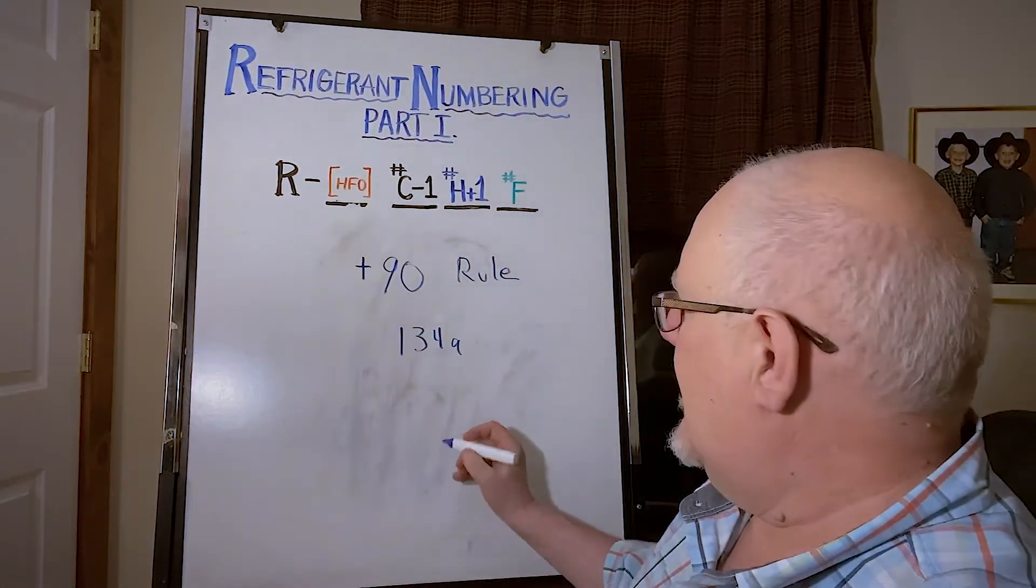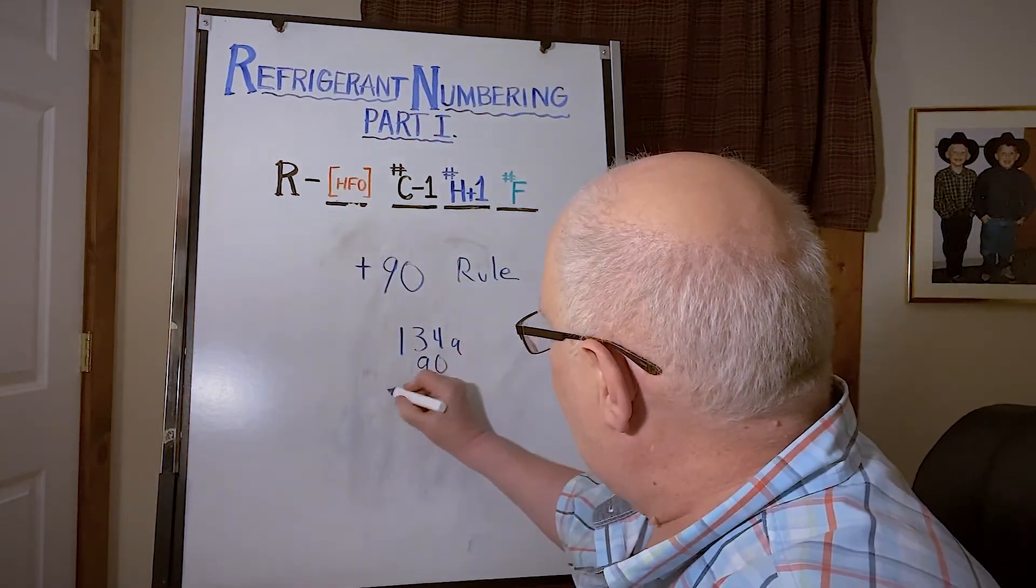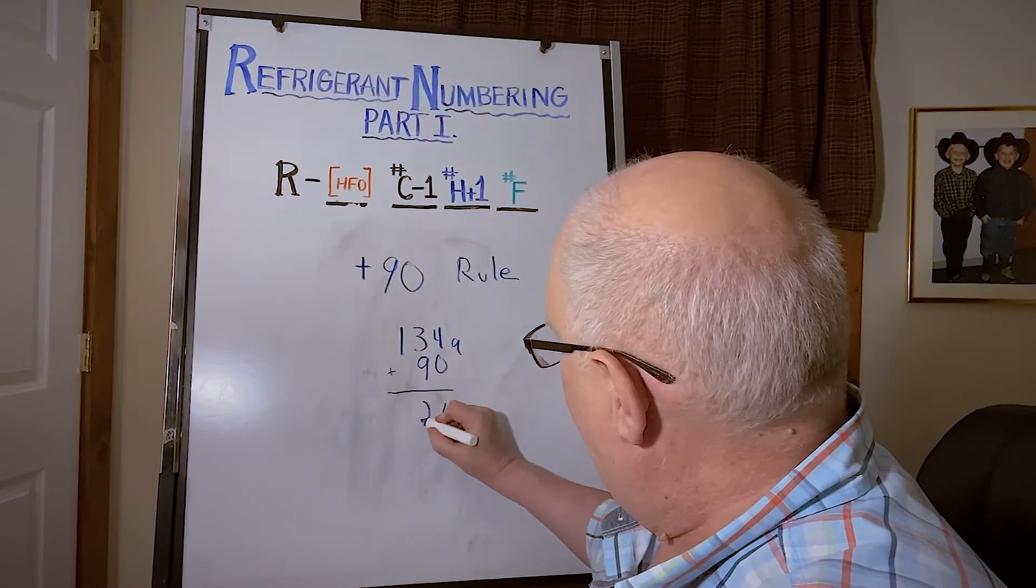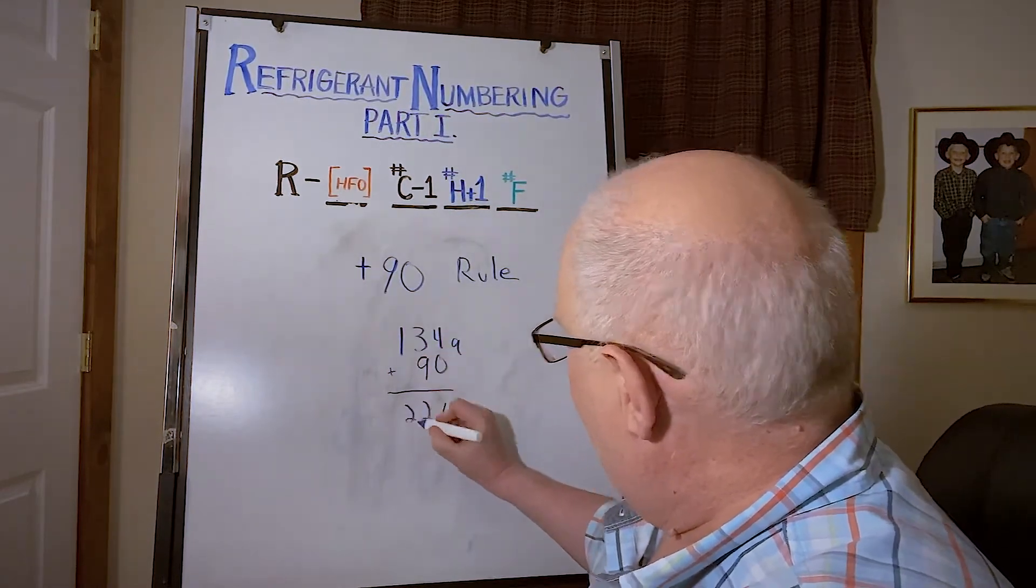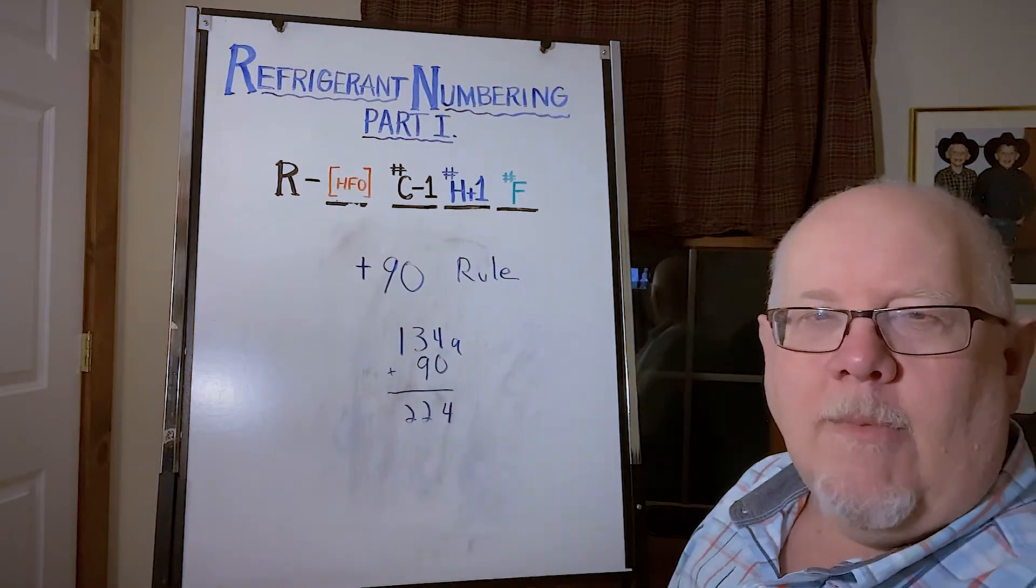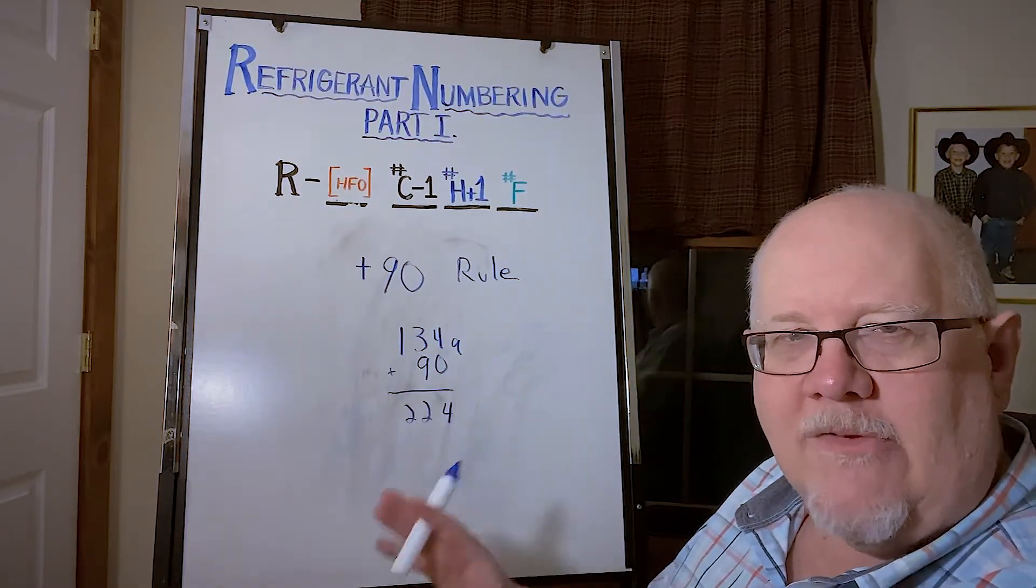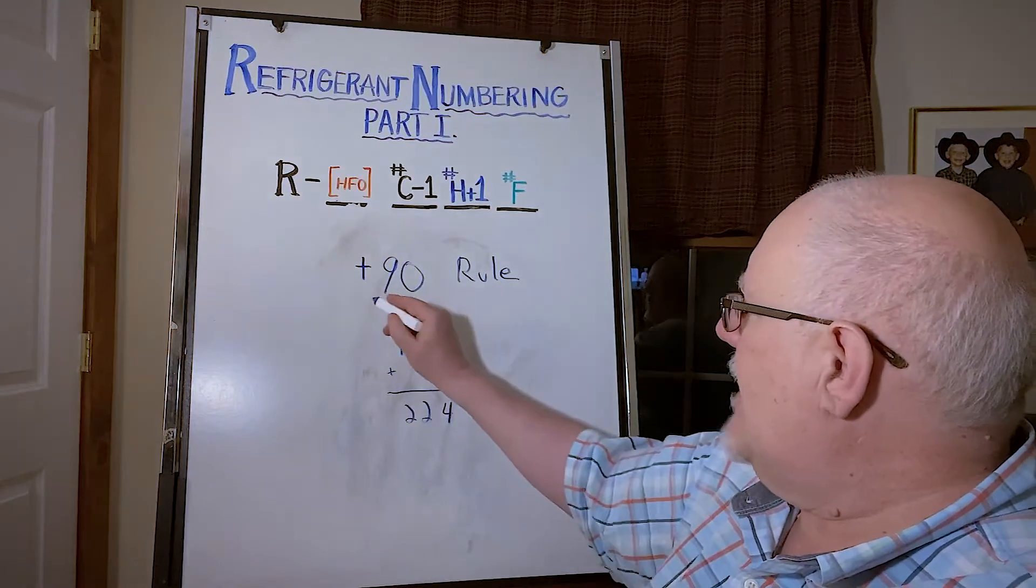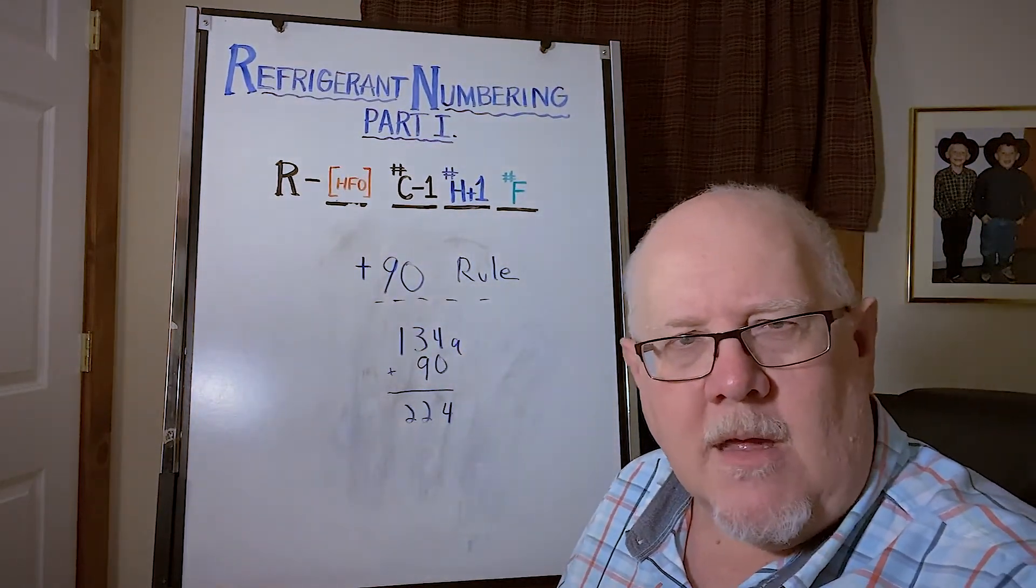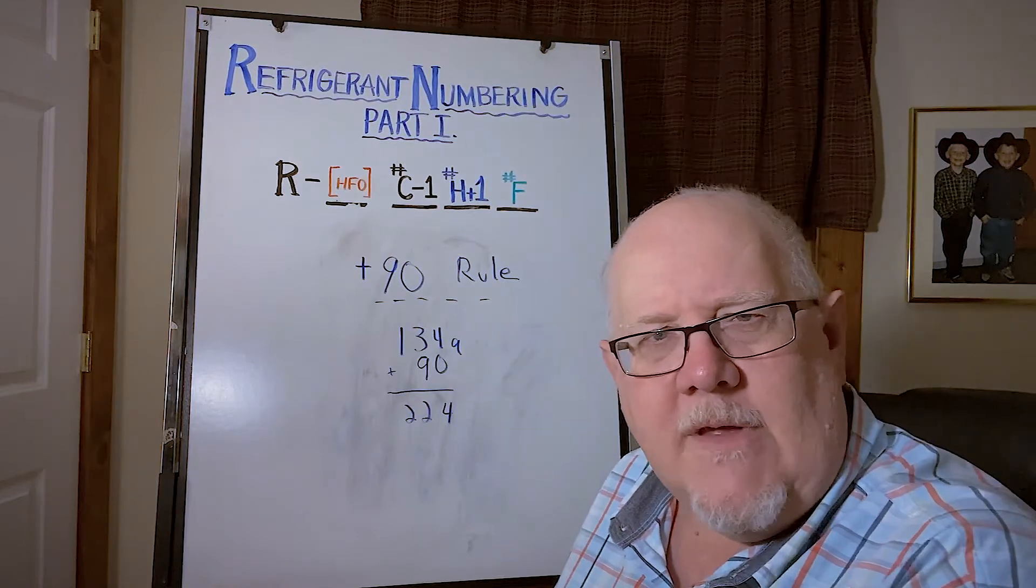So again, 134a, if we followed this and added 90 to it, this will give us directly now four fluorines, two hydrogens, two carbons. Don't have to worry about whether it's plus one minus one. Some people like to use the minus 90 rule, some people think it's obvious without it, but I offer that to you if it helps you remember it.